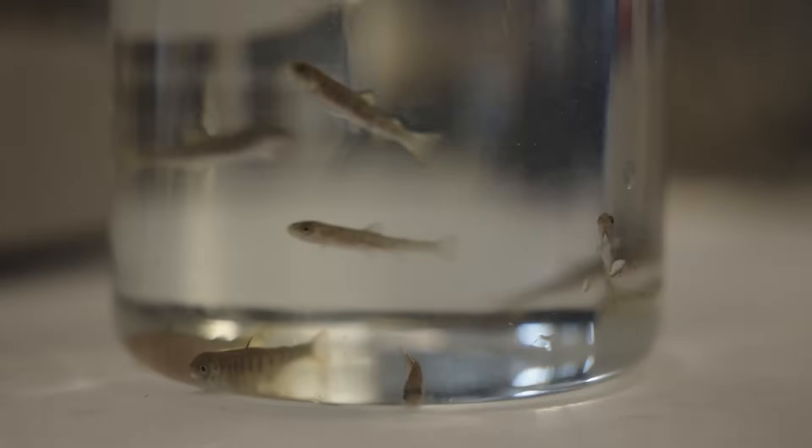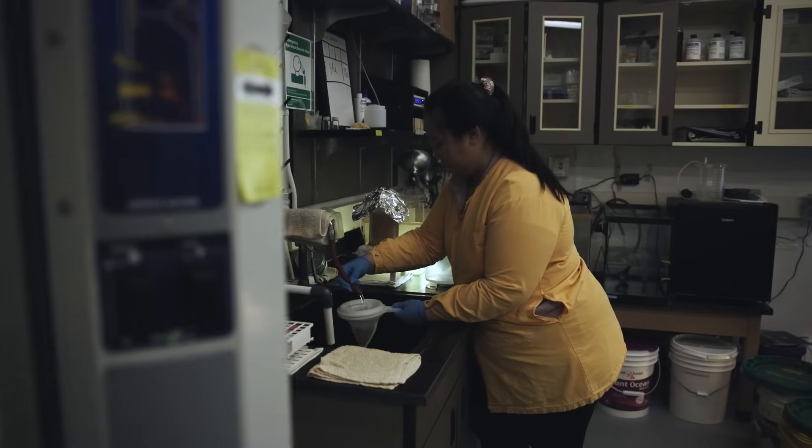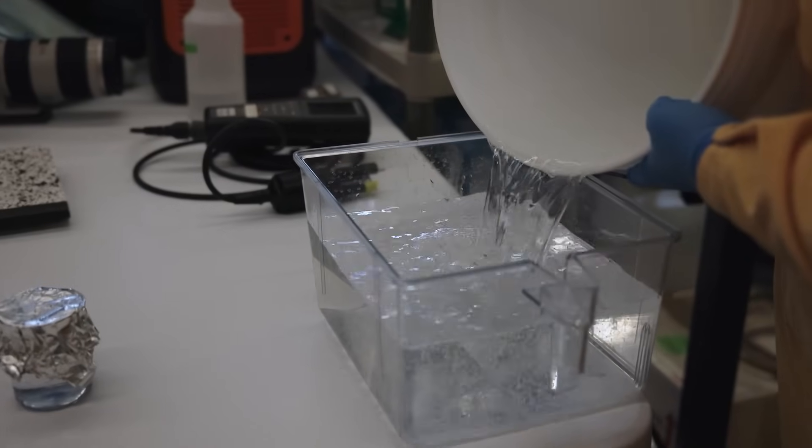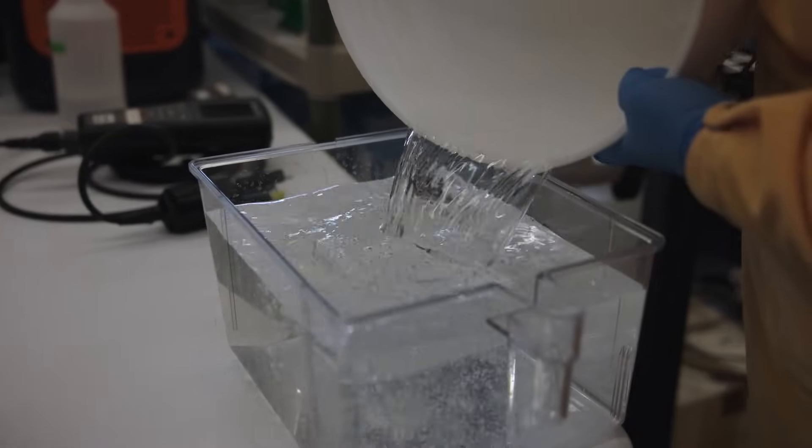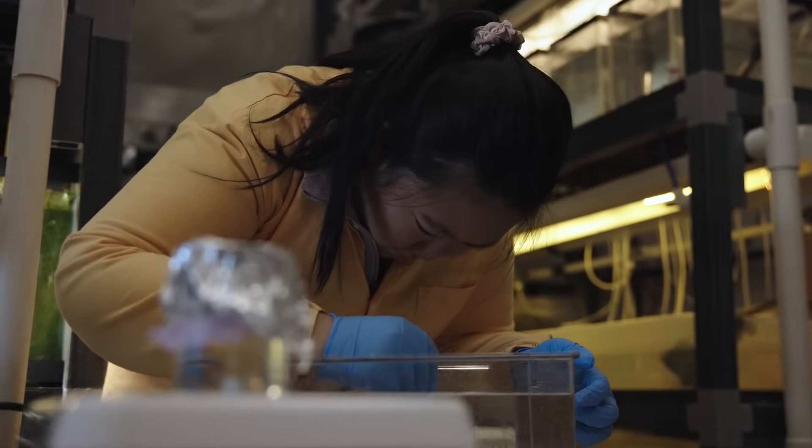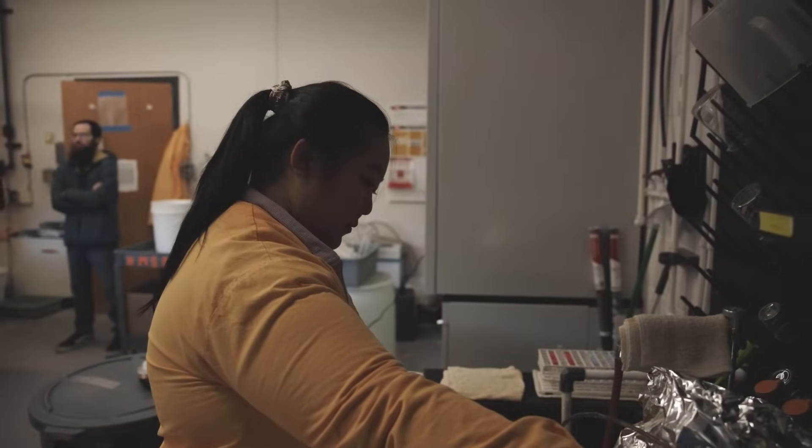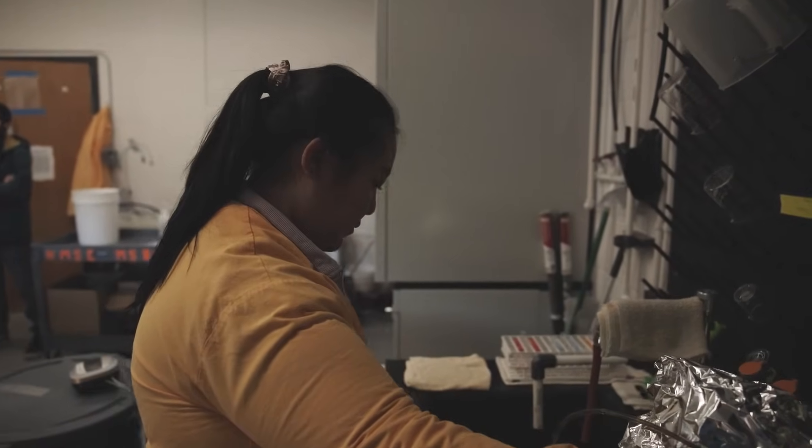In the lab we use organisms like silversides and mysid shrimps and perform these standard toxicity tests where we expose them to microfibers, to tire particles. We're beginning to see impacts on things like their growth and behavior, and hopefully that can give us some insight into what kind of effects eventually it has all the way up in these larger systems.